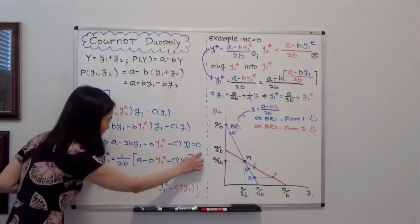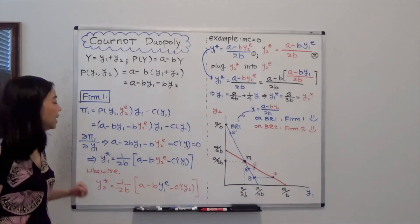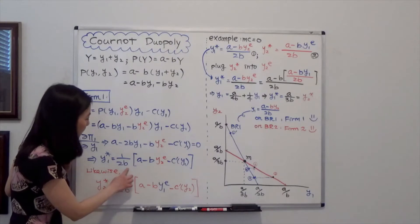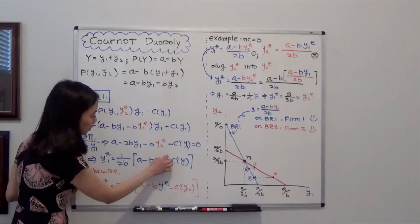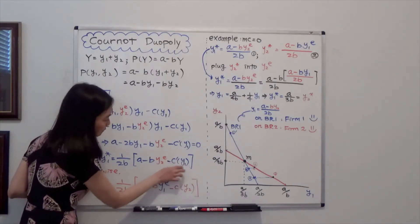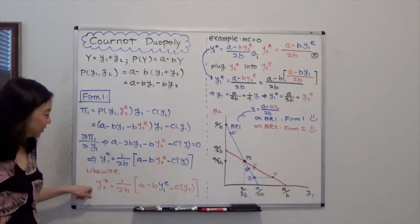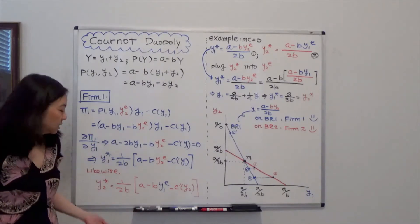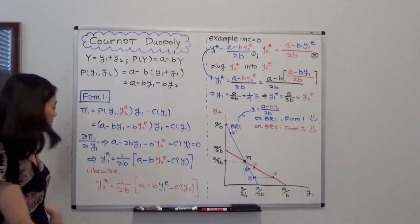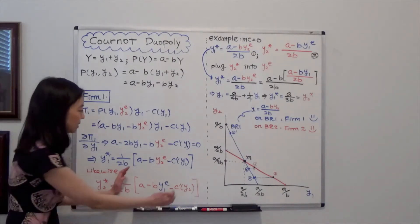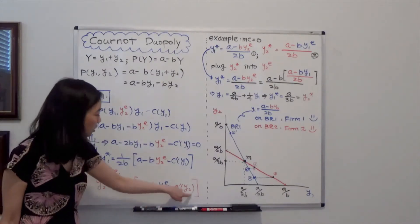After setting the derivative equal to 0, we find the optimal quantity of firm 1, called Y1 star, which is equal to 1 over 2B times the quantity A minus B times Y2E minus the marginal cost of firm 1. Likewise, firm 2's optimal quantity, Y2 star, equals 1 over 2B times A minus B times Y1E minus the marginal cost of firm 2.